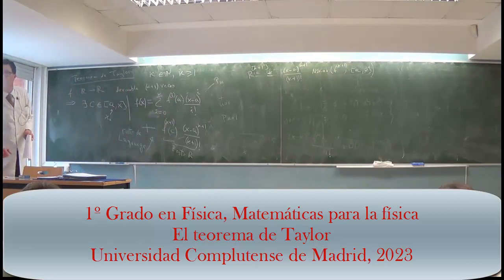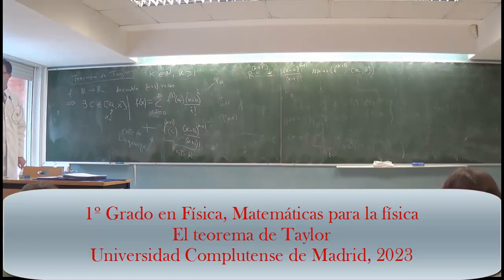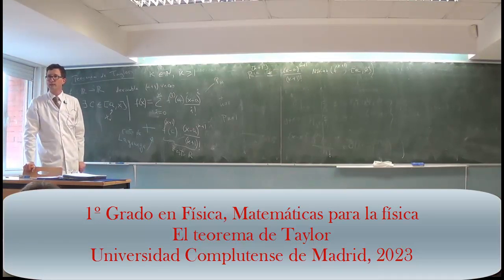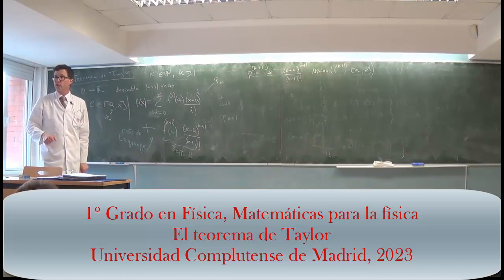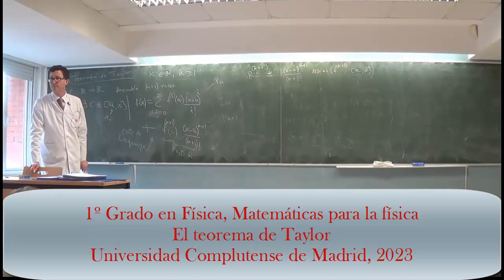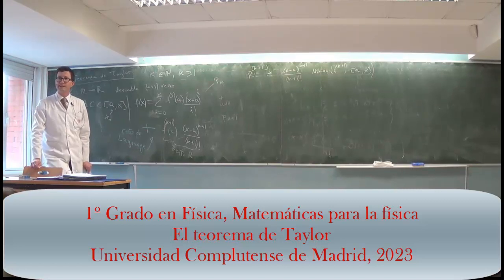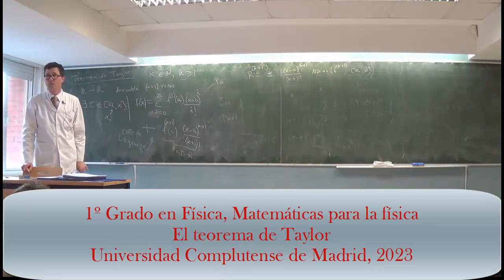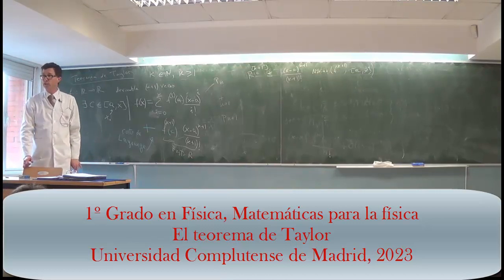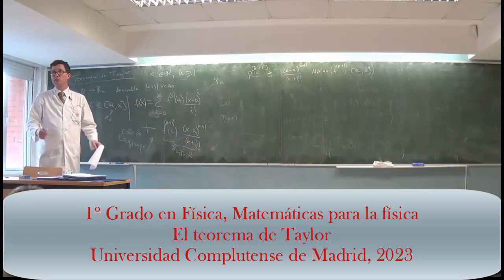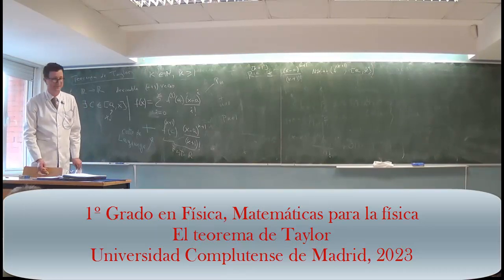Question: if you expand a polynomial until its last derivative — until the first one that vanishes — when would it be exact? If you expand a polynomial, the Taylor expansion of a polynomial is another polynomial. But if you expand the sine, you keep having non-zero derivatives up to infinity — it never ends. Functions that have all derivatives zero from some point on are polynomials, by definition.